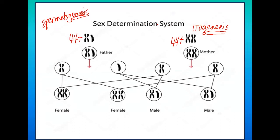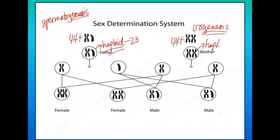The sperm is considered haploid — the material transferred from the father to the mother contains only 23 chromosomes. For the offspring to have a complete set of 46 chromosomes, the other 23 come from the mother's egg cell, which is also haploid. So 23 plus 23 gives us 46.